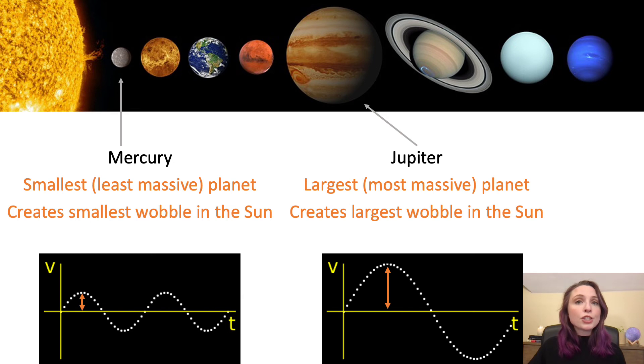If we compare this to Jupiter, which is the largest or most massive planet in the solar system, we know that Jupiter creates a pretty large wobble in the sun. So if we measure the movement of a distant star, and we see that it's wobbling a lot because of an exoplanet, we know that exoplanet is pretty big, like Jupiter. And if that star is only wobbling a little bit because of an exoplanet, we know that exoplanet is pretty small, more like Mercury.